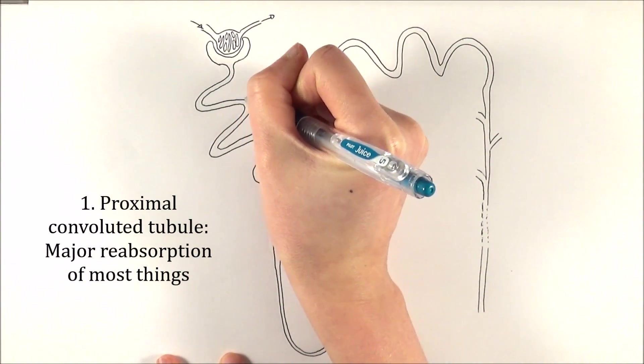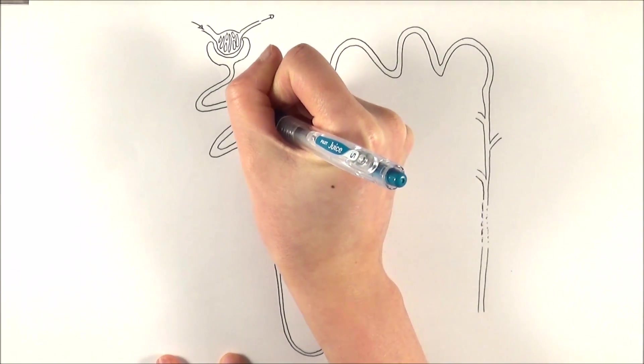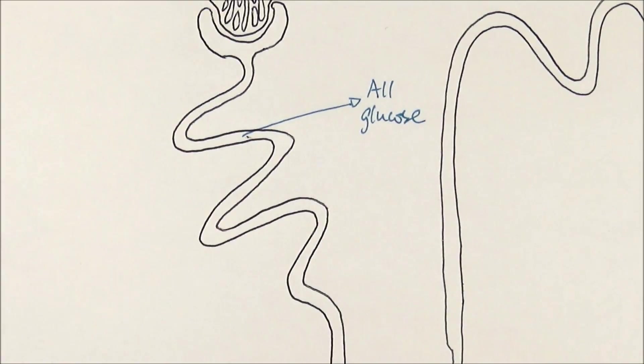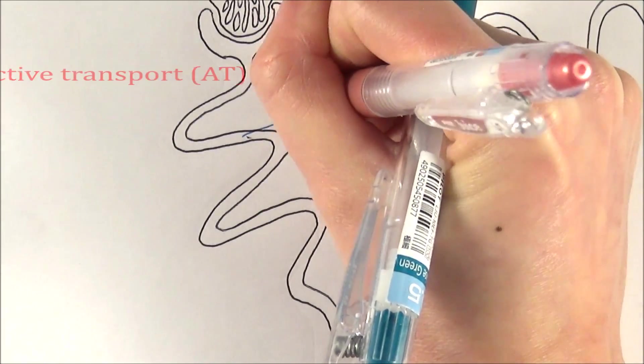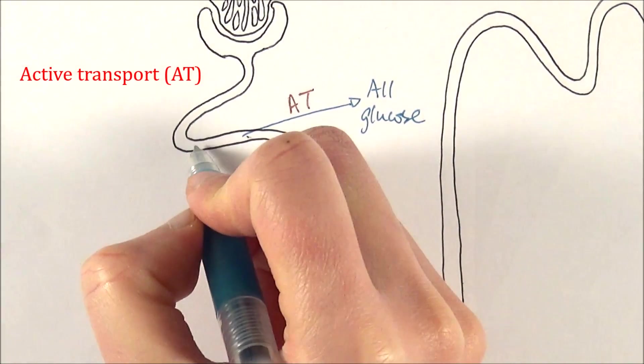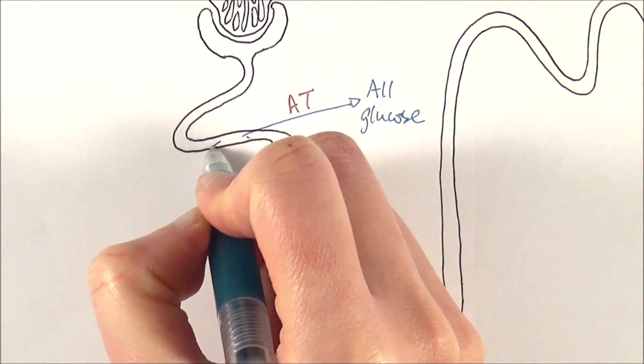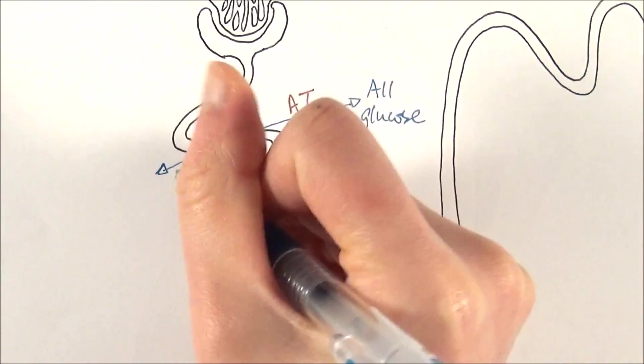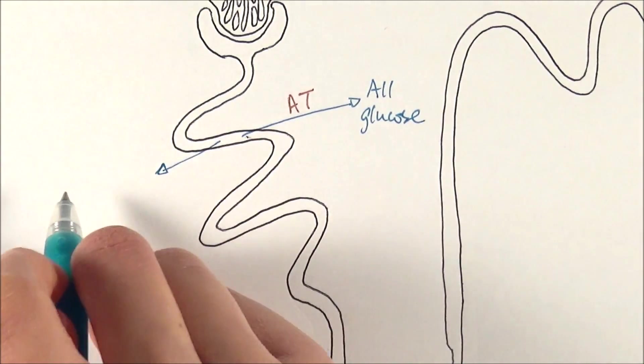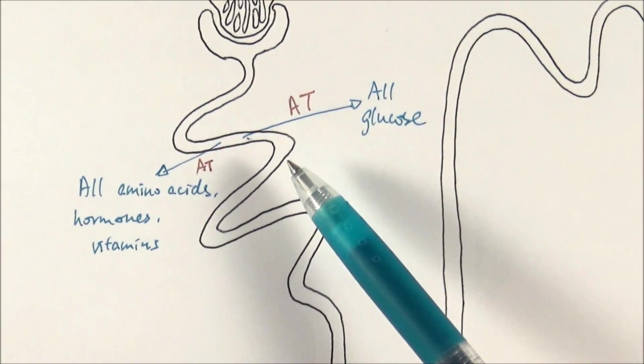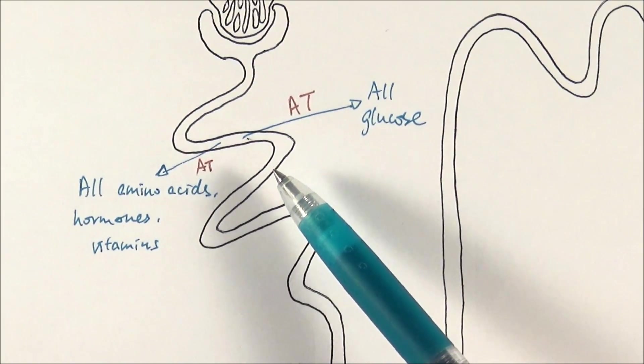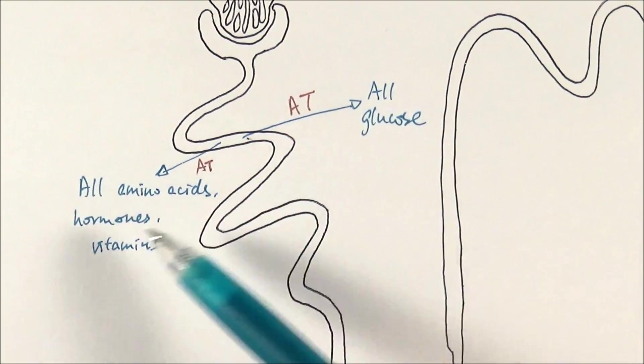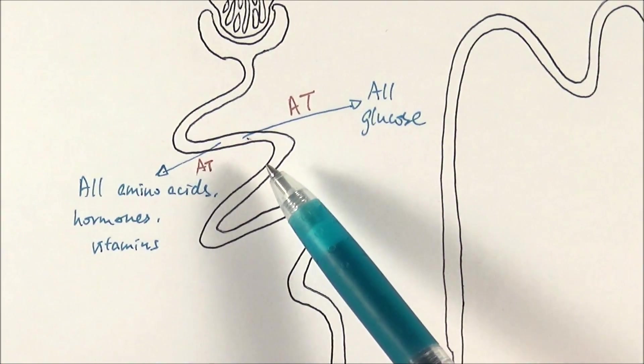The first thing that we can consider is that glucose is being reabsorbed completely, and all of this glucose is reabsorbed by the process of active transport. If we rely on diffusion, it might stop when we reach an equilibrium point, which we don't want happening because we want everything back. So we rely on active transport to do so.